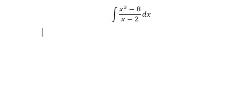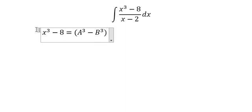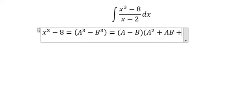We have x power 3 minus 8, just like a power 3 minus b power 3, and here a is x and b is 2. So we will apply this formula: a minus b multiplied with a power 2 plus ab plus b power 2. So we put a is x and b is 2.